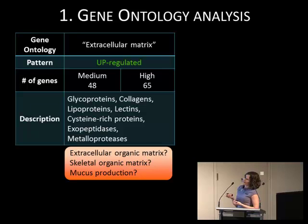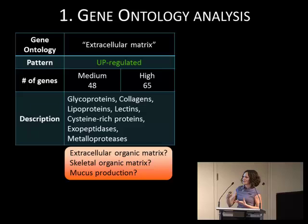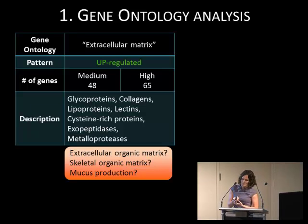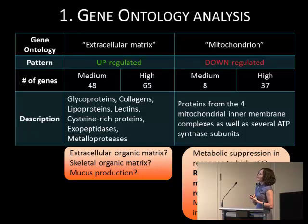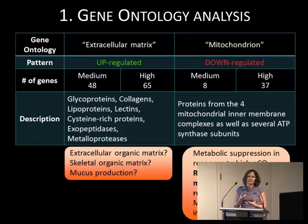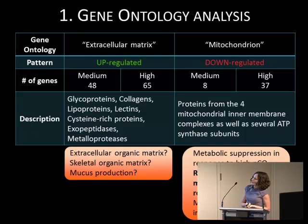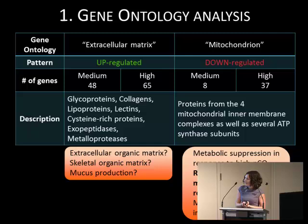We cannot tell definitively whether those genes belong to the extracellular organic matrix or the skeletal organic matrix — we would need to localize those genes in situ. Another hypothesis is that these proteins could have a role in mucus production, as in response to acute stress, the coral produces mucus to isolate its tissue from the external medium. The second category is mitochondrion — many genes involved in the mitochondrial machinery responsible for energy synthesis were down-regulated, suggesting a metabolic suppression and reallocation of energy to more immediate stress response needs such as mucus production, pH homeostasis, and immune defense.